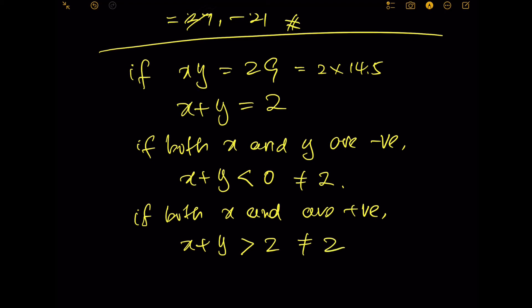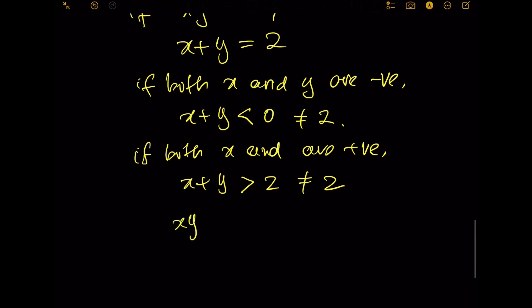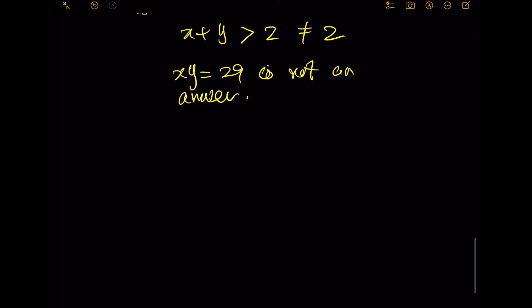For example, 1 plus 29 is 30, 2 plus 14.5, or 4 plus 7.25, which is certainly bigger than 2. So under both cases, we know that xy equals 29 is not the real number solution for the question. Therefore we know the final answer xy for this question is negative 21. Of course you can test using the same way we tested xy equals 29, but I'm sure it is the answer.